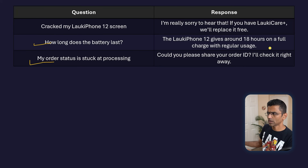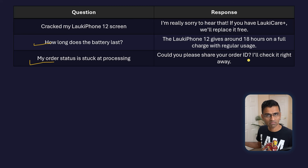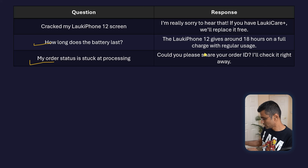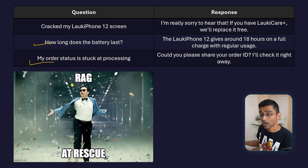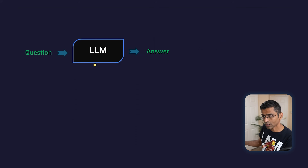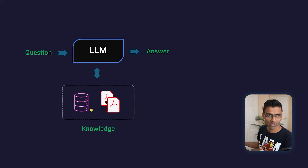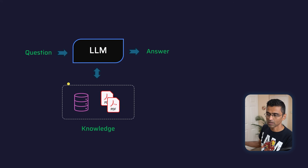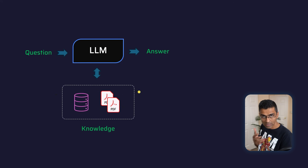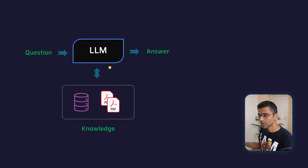There might be other questions too, like 'How long does the battery last?' — data that is private to the organization and the LLM has never seen. So using a plain LLM it won't be able to answer. What you do is use a technique called Retrieval Augmented Generation. In RAG, you point your LLM to an external source of knowledge — a database, PDF files, whatever — and it will be able to answer from that private data.